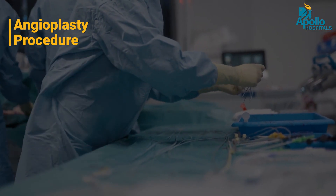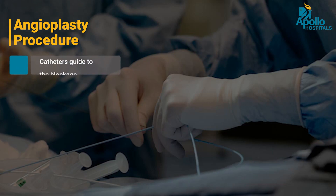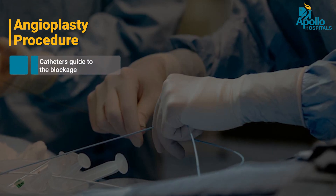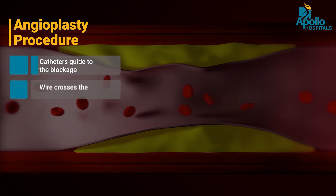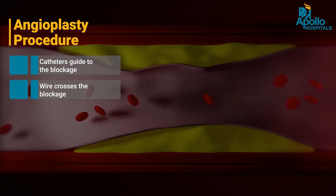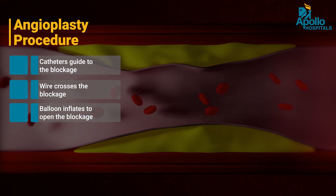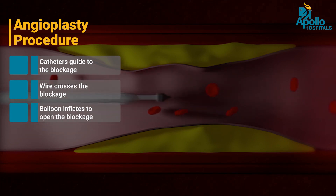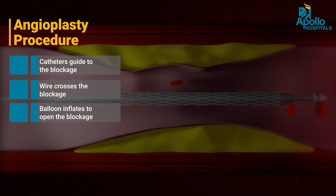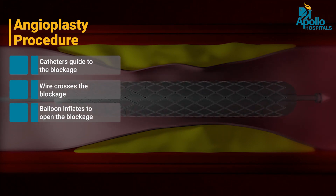Through that tube, we introduce a catheter which goes into the blood vessel origin. A wire is passed across the lesion through the catheter. Then a balloon is threaded over the wire, goes near the blockage, and is inflated from outside. This is the first step where the blockage is treated with the balloon.